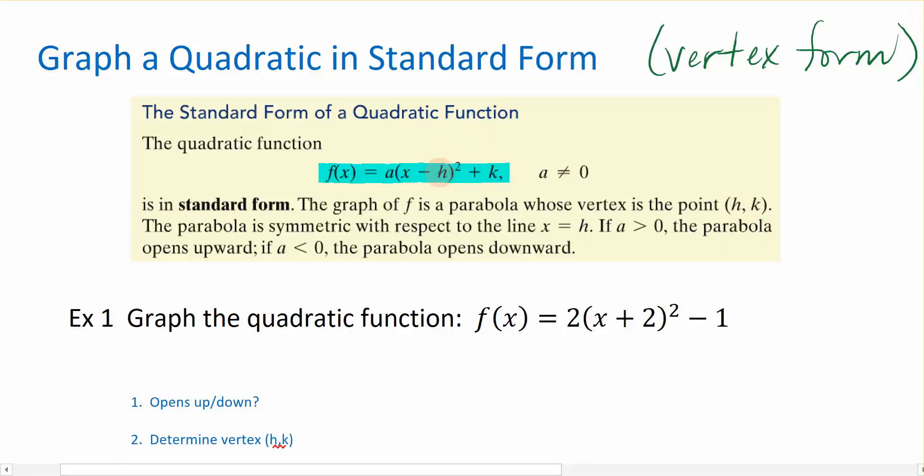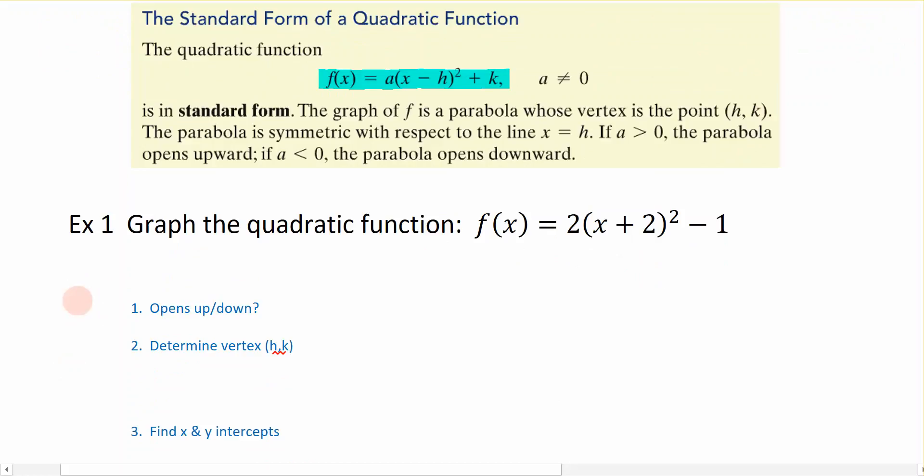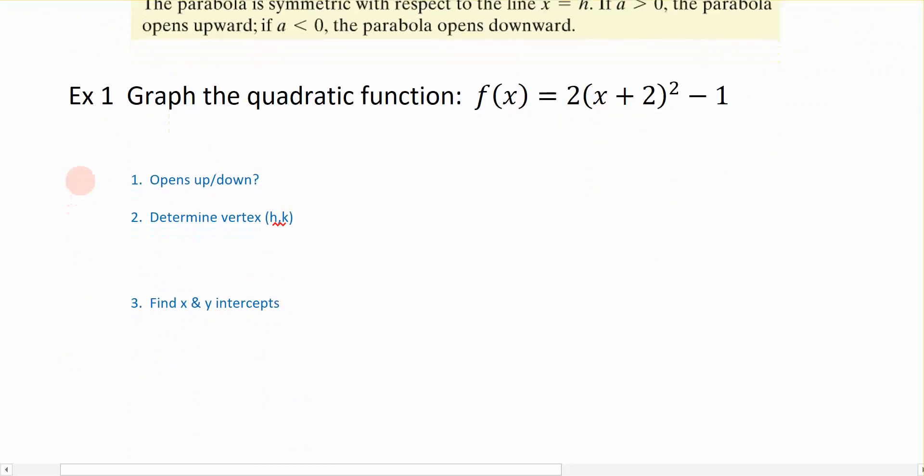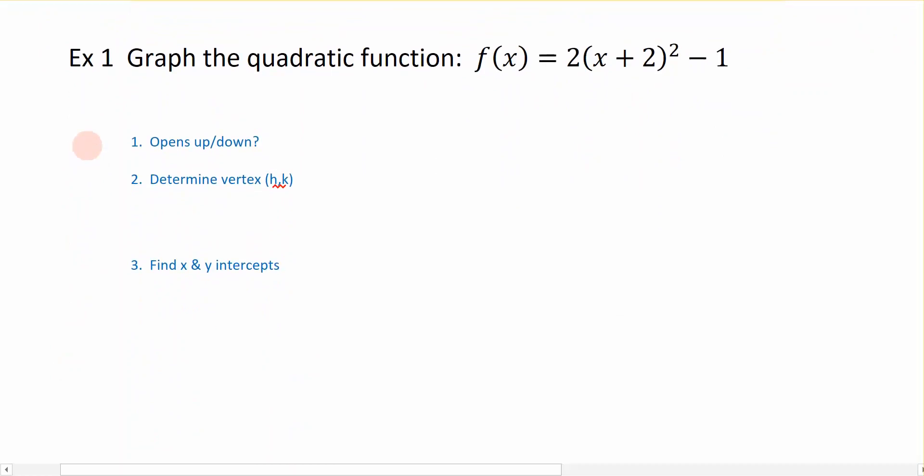Notice that the h, the sign of h when I put it in the ordered pair is opposite from what it is in the formula. And the sign for k in the ordered pair is the same as in the formula. So you want to watch out for that whenever you're graphing. But we're going to work an example together. So here I want to graph the quadratic function 2 times (x + 2) squared minus 1.